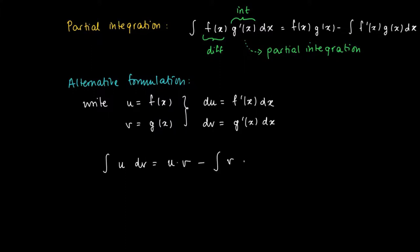And f times g equals u times v minus the integral over v du, since f prime x dx is on our right-hand side written as du, and g of x equals v.